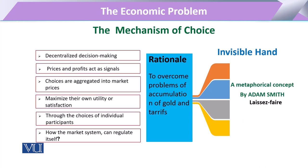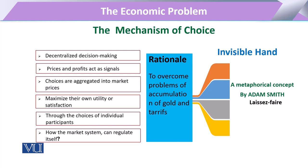Now we will explain the first method or mechanism of choice, that is the invisible hand. The invisible hand is not an actual hand — rather it is a metaphorical concept that was given by Adam Smith.